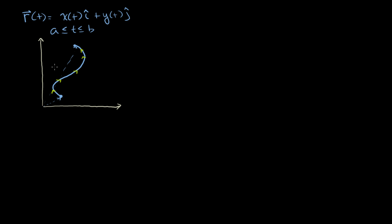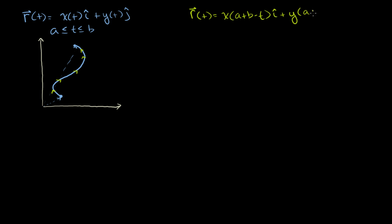Now let's say we have another position vector function — call it r-reverse. Instead of being x(t) times i, it's going to be x(a + b − t) times i. And instead of y(t), it's going to be y(a + b − t) times j.